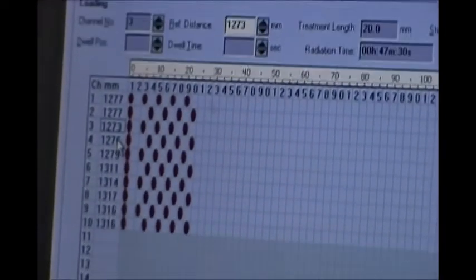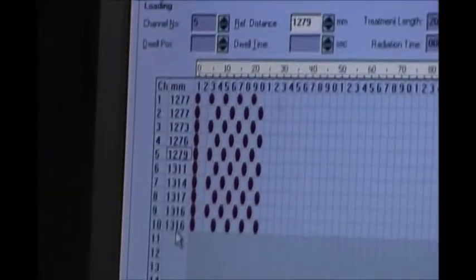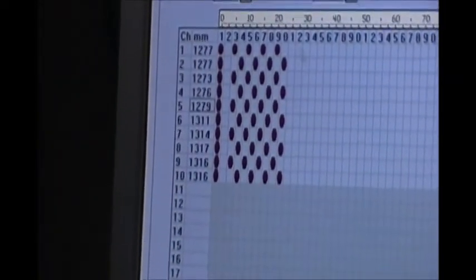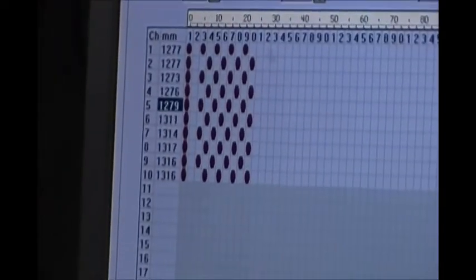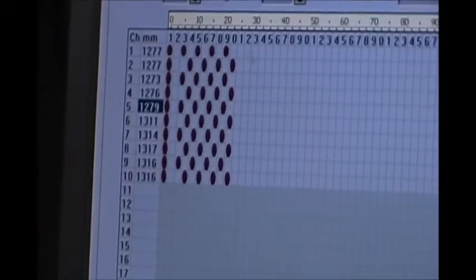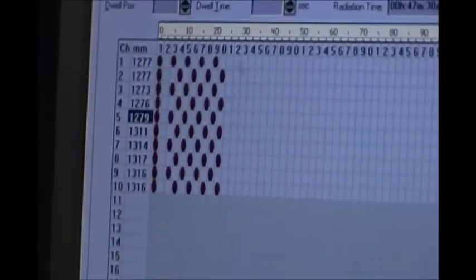You can see this is 1277 in the first few and 13 something for the last few. I will explain more about it later. We are going to use the surface mold, which is the fiber flap, for the source position check.